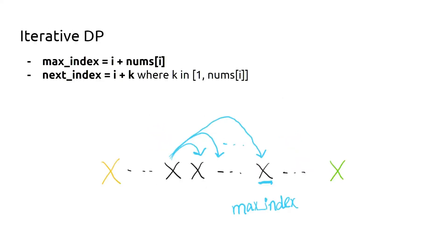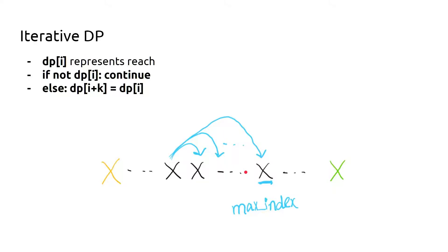Let's formalize the DP thinking. The maximum index we can jump to from index i is i plus nums[i]. The intermediate indices we can jump to are i plus k, where k ranges from one to nums[i], both inclusive. This inclusive property is important. Starting from index i, you can reach the maximum index i plus nums[i] as well as all intermediate indices in between.